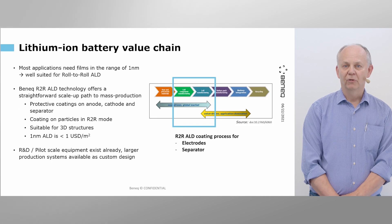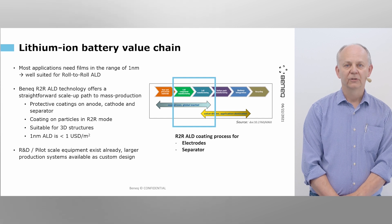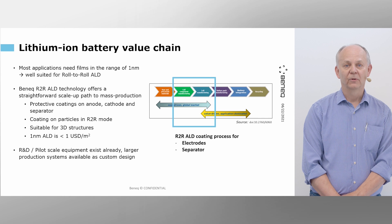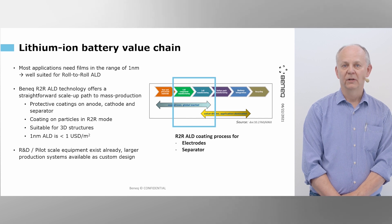Benek roll-to-roll ALD gives a direct scale-up to mass production for protective coatings on anode, cathode, and separators. Coating on particles is also possible in roll-to-roll, as well as roll-to-roll for suitable 3D structures. For reference, one nanometer of ALD coating cost of ownership is less than one US dollar per square meter.